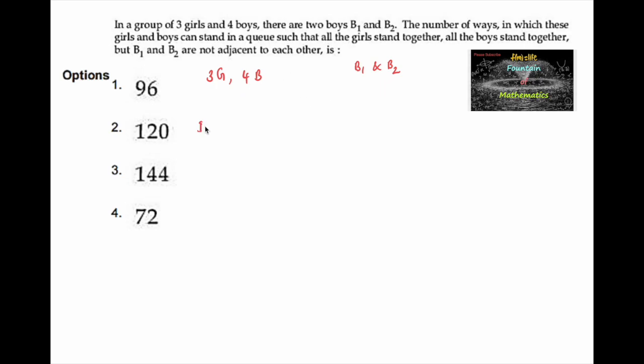There are two cases. In the first case, all three girls are here, and then followed by the boys in which B1 and B2 are not adjacent. Let us mark first the other two boys, B2 and B4, having gaps in between them. So we can see there are one, two, three gaps.